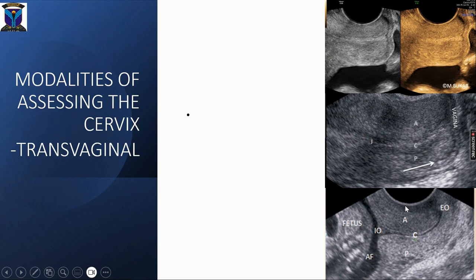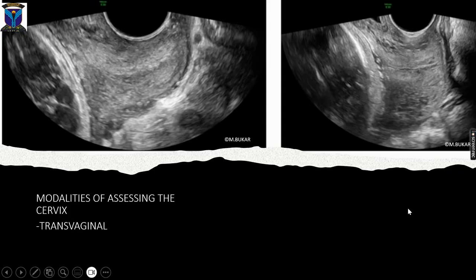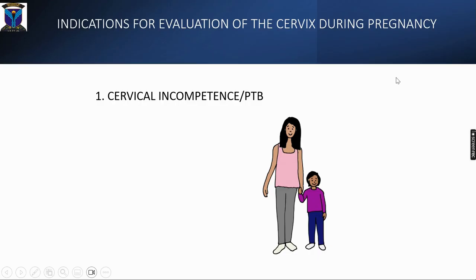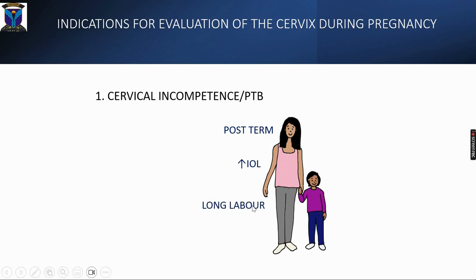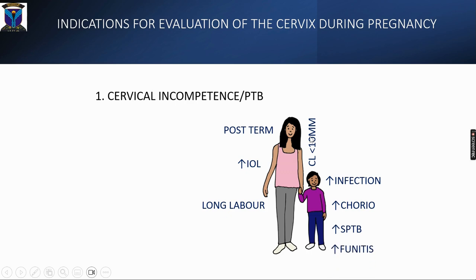Transvaginal imaging clearly outlines cervical anatomy, shown here at 36 weeks in a singleton and in a multiple pregnancy. Indications for evaluating the cervix during pregnancy: a long cervix is associated with prolonged labor and post-term pregnancy; a short cervix — especially less than 10 millimeters — is associated with increased risk of infection, chorioamnionitis, spontaneous preterm birth, and funisitis.